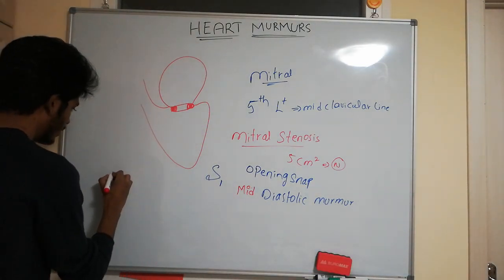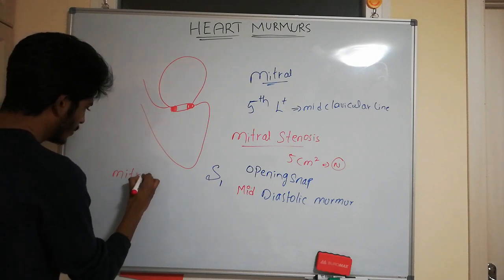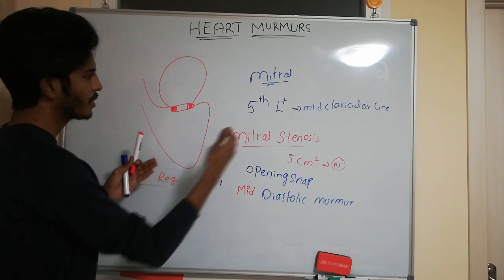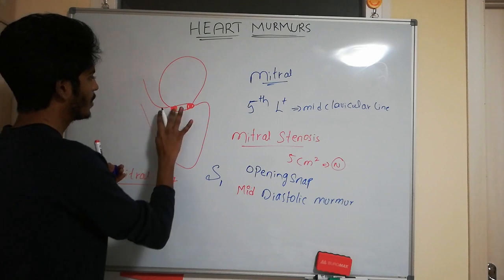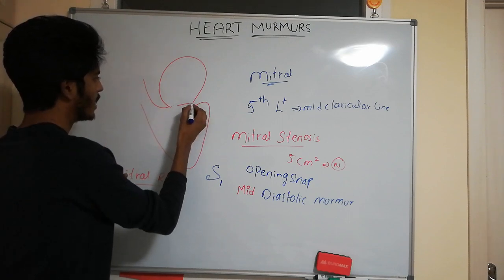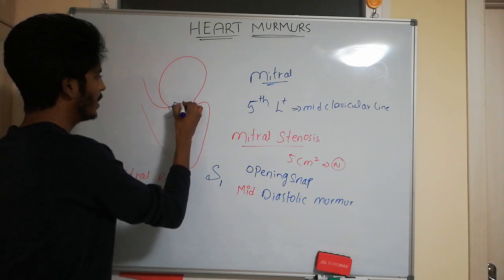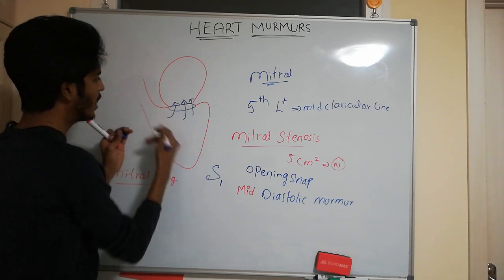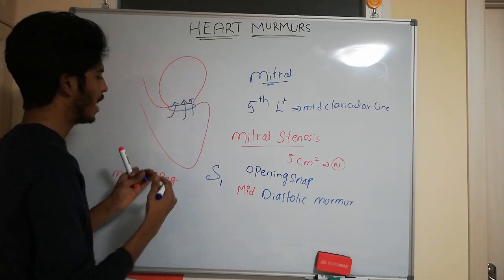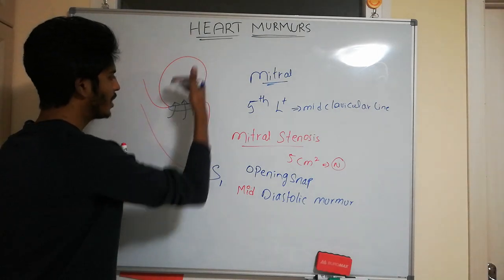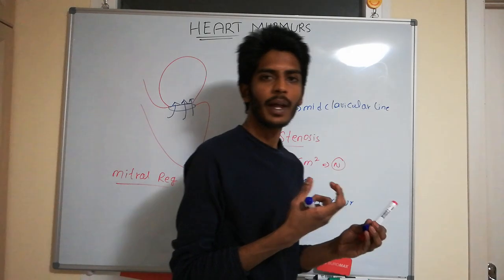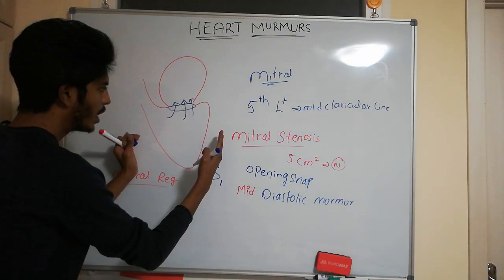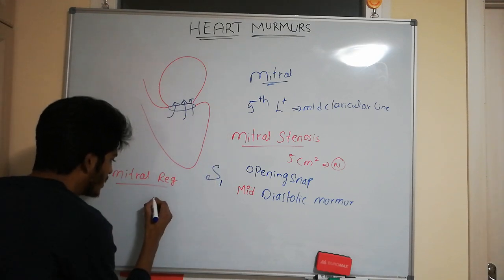Now let's talk about mitral regurgitation. In mitral regurgitation, the pathophysiology is opposite to stenosis — the valve is dilated. There will be backflow of blood from the ventricle to the atria. When the ventricle squeezes blood, instead of entering the aorta, blood enters the atria. As blood flows back to the atria it creates a murmur. This murmur occurs during ventricular systole, so it is a systolic murmur.